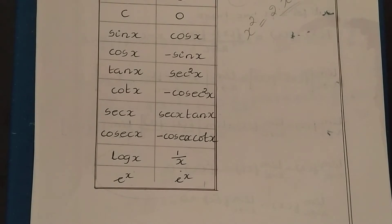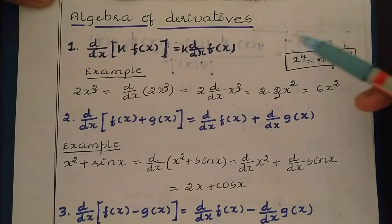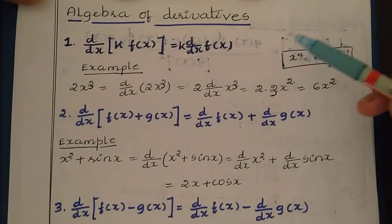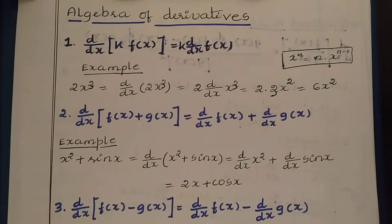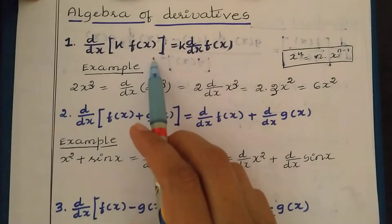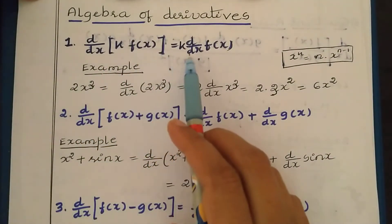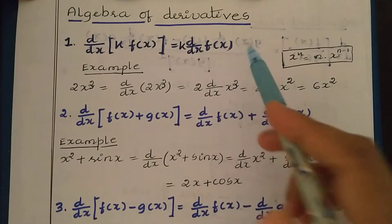So that is about the derivatives of standard functions. Now let us see the algebra of derivatives. Here we have five rules related to the algebra of derivatives. The first rule is: d/dx of k·f(x) is equal to k·(d/dx of f(x)).